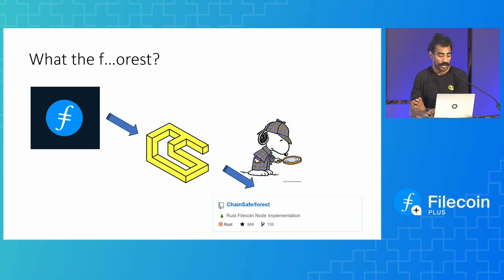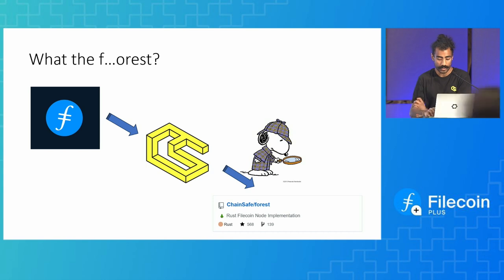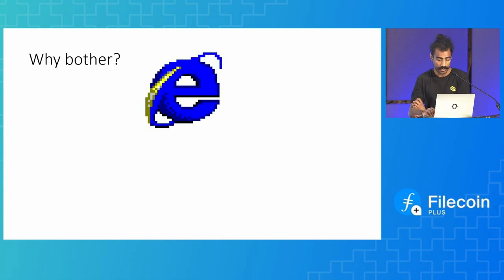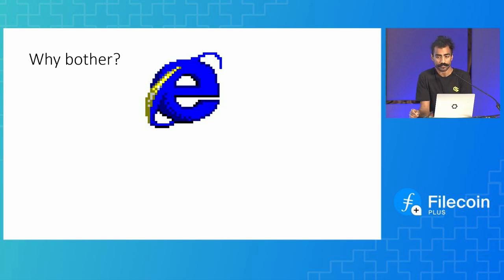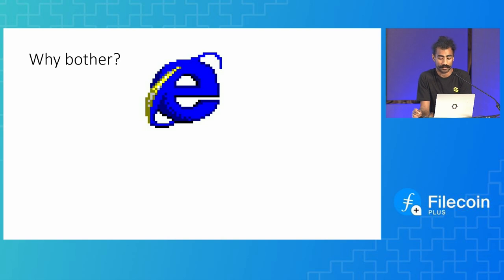Why did Filecoin commission ChainSafe for Forest in the first place? It was part of their client diversity initiatives. Why bother with another implementation? Client diversity is often the sign of a healthy specification, and it helps to drive an ecosystem forward.